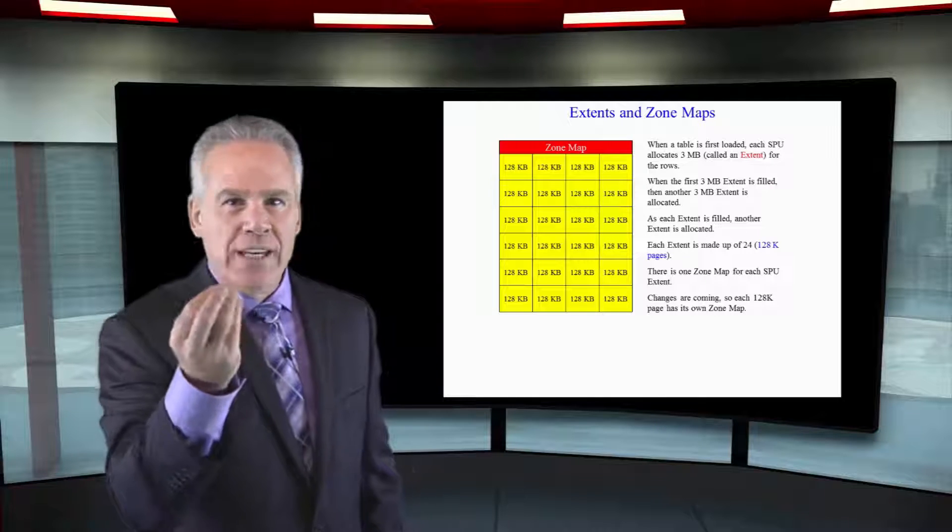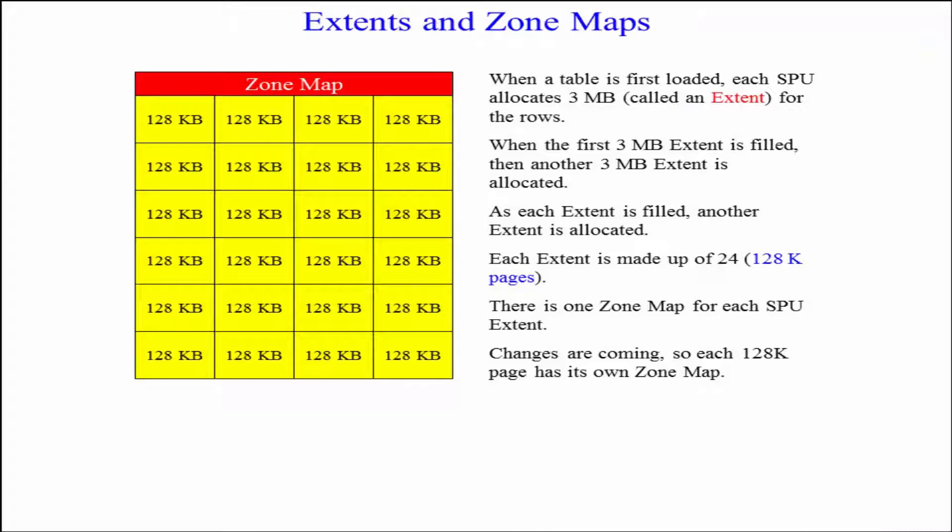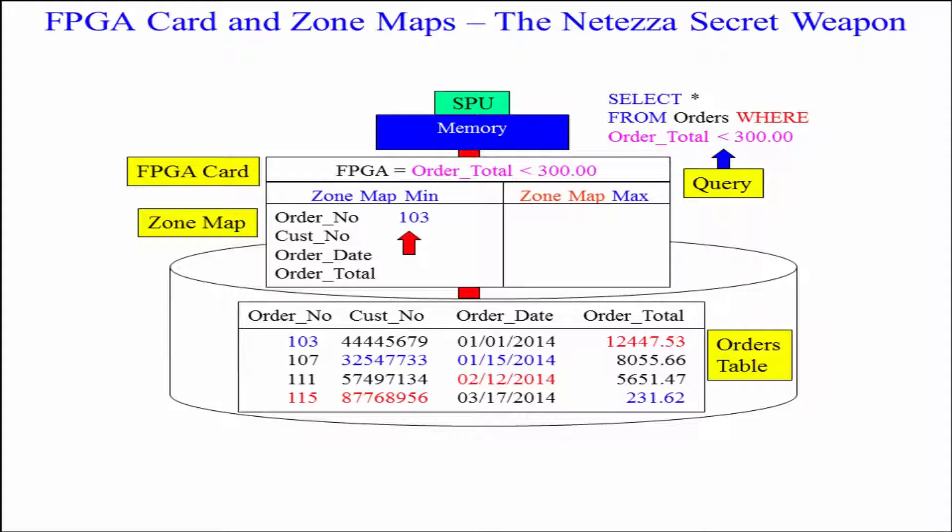What I need you to see as clear as a bell on top of that extent is the zone map. It's going to take the first 200 columns of that table, and it's going to put the min and max value for all of the rows in that particular extent. Each extent is going to have its own zone map so that they're going to know what's in there for the most part between the min and the max.